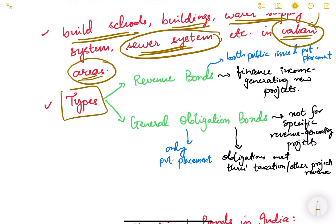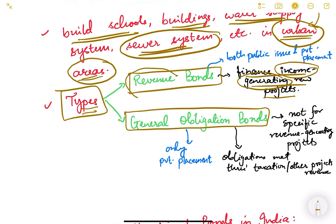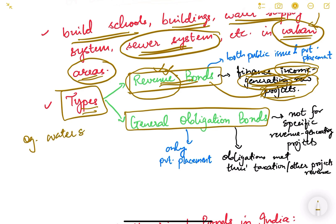There are two types of municipal bonds. The first is called revenue bonds and the second is called general obligation bonds. Revenue bonds are issued to finance new income-generating projects — income-generating meaning revenue-generating. Whatever work is done from these bonds must be a new project and it should be income-generating.